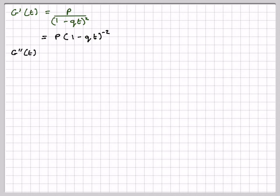Differentiating using the chain rule, we're going to have -2p(1-qt)^(-3) times the differential of the bracket, which is minus q.